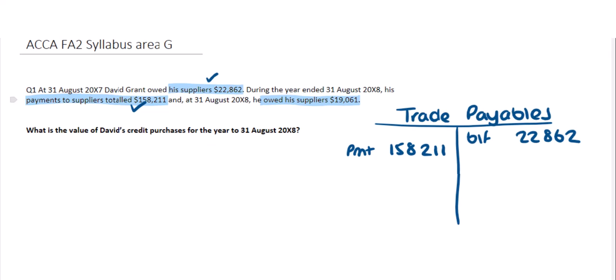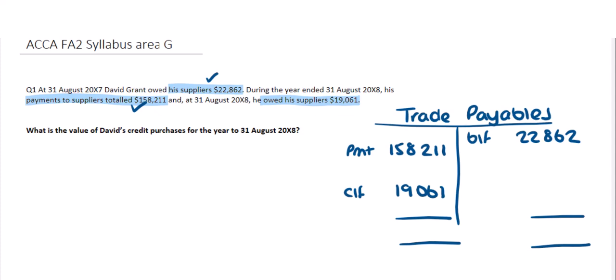The other number we've been given is the closing balance — the amount owed to suppliers at the end of the year, 31st of August 20x8 — which is $19,061. This would be shown as a balance carried down, and then a brought-down figure on the left-hand side. So I'm going to show my carry forward on the debit side as $19,061, because that would then be brought down onto the opposite side afterwards.